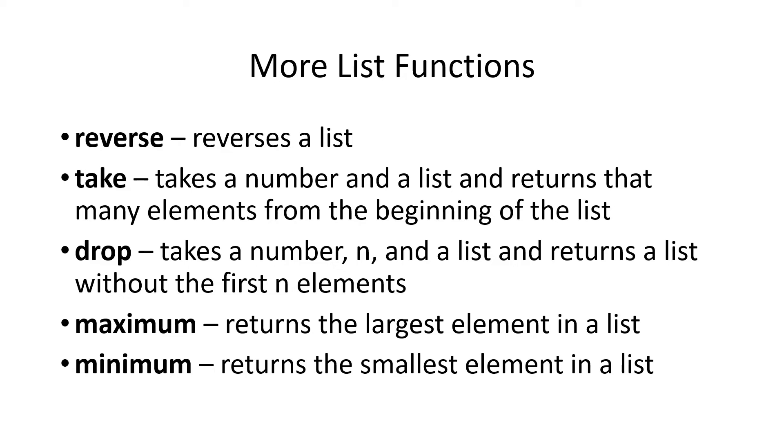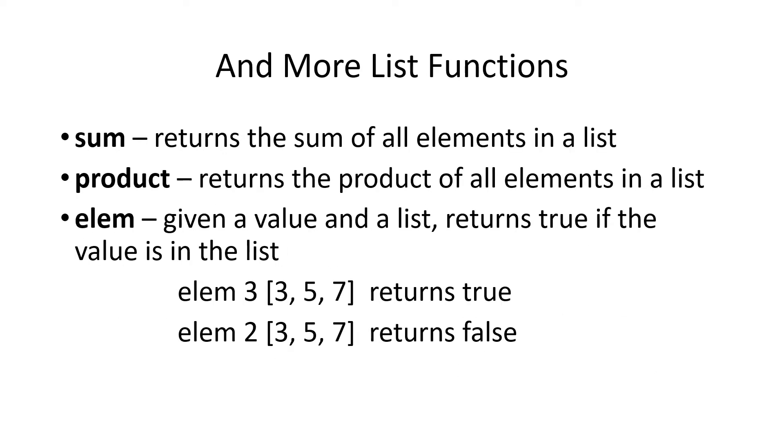Maximum and minimum do as you might expect. They return the largest or smallest element in the list. Some elements that are useful for arithmetic are sum and product. They return the sum or the product of all the elements in the list.